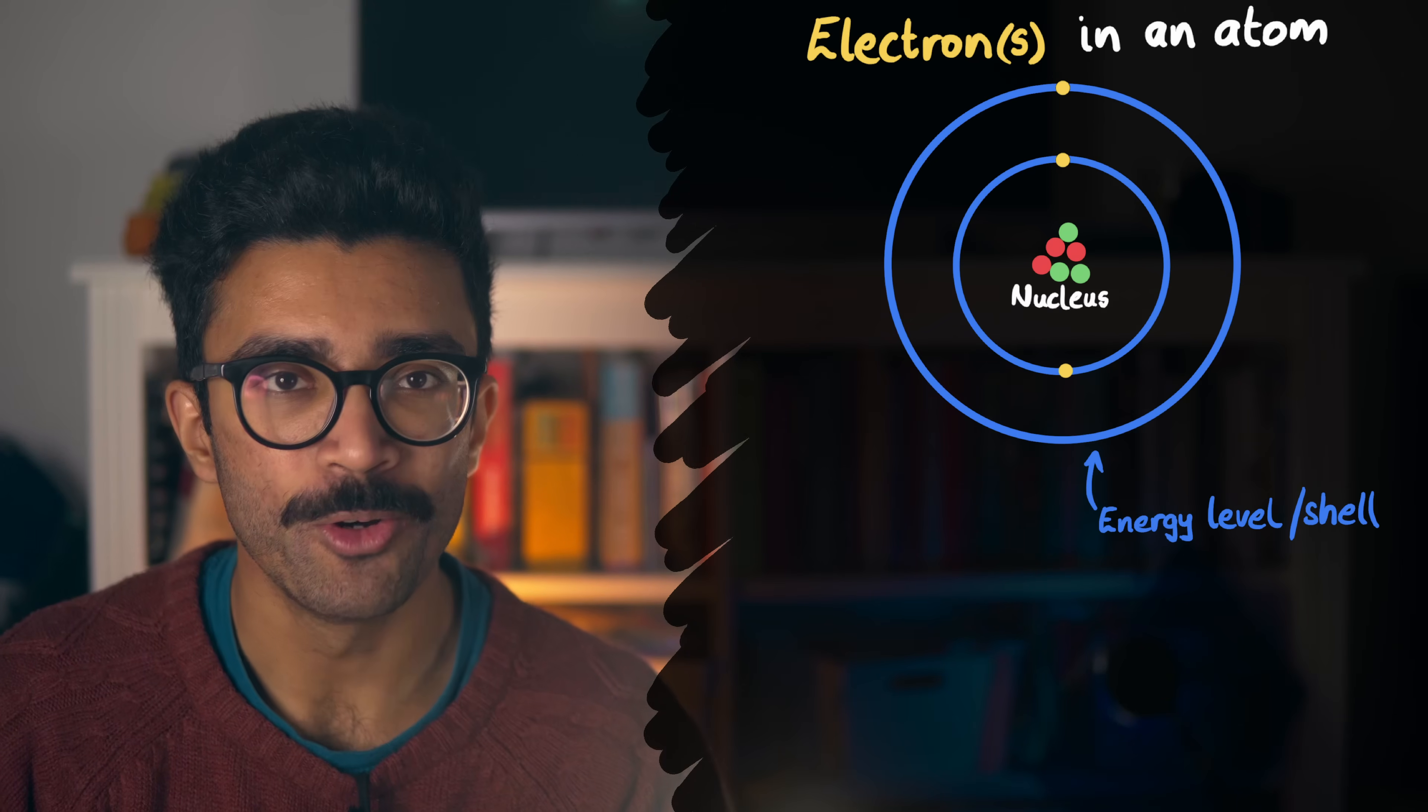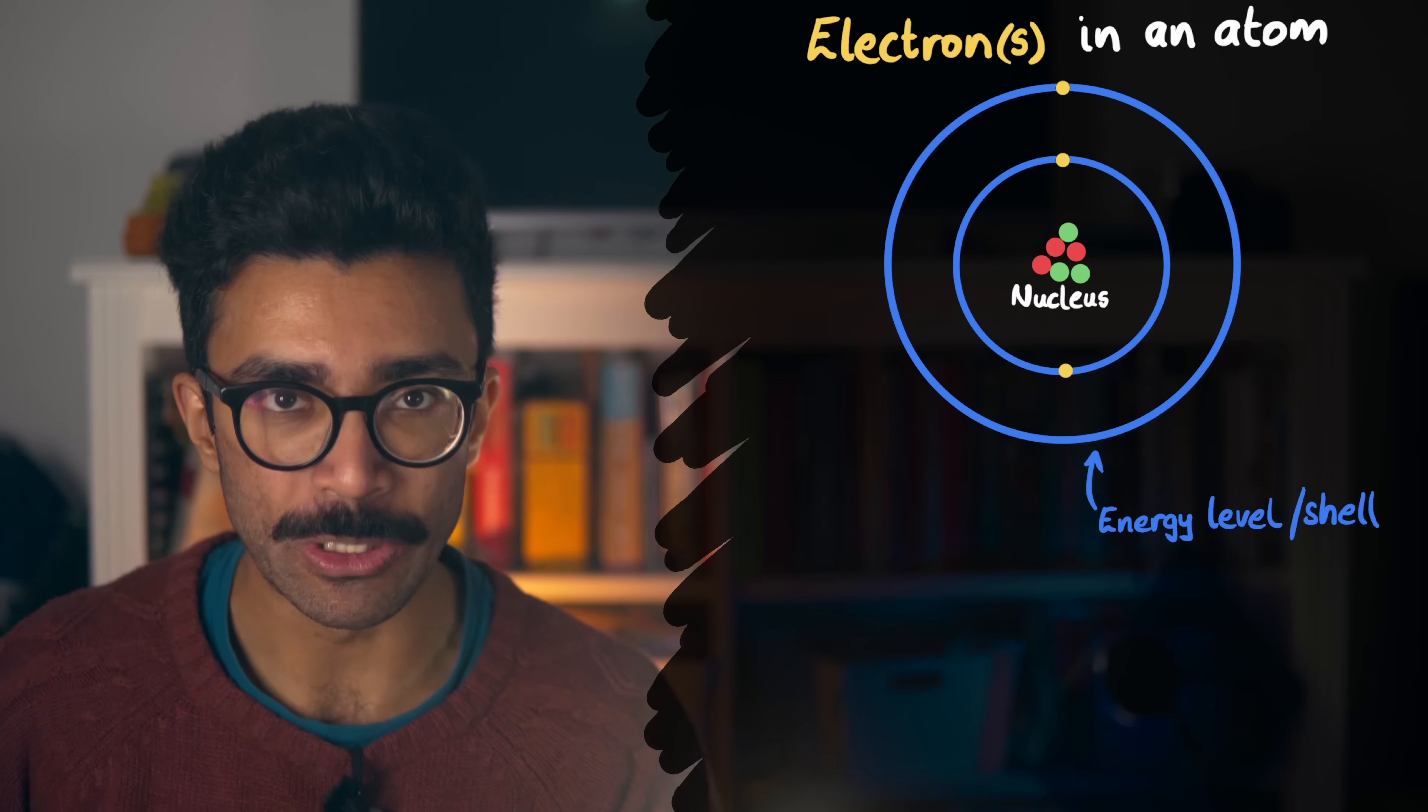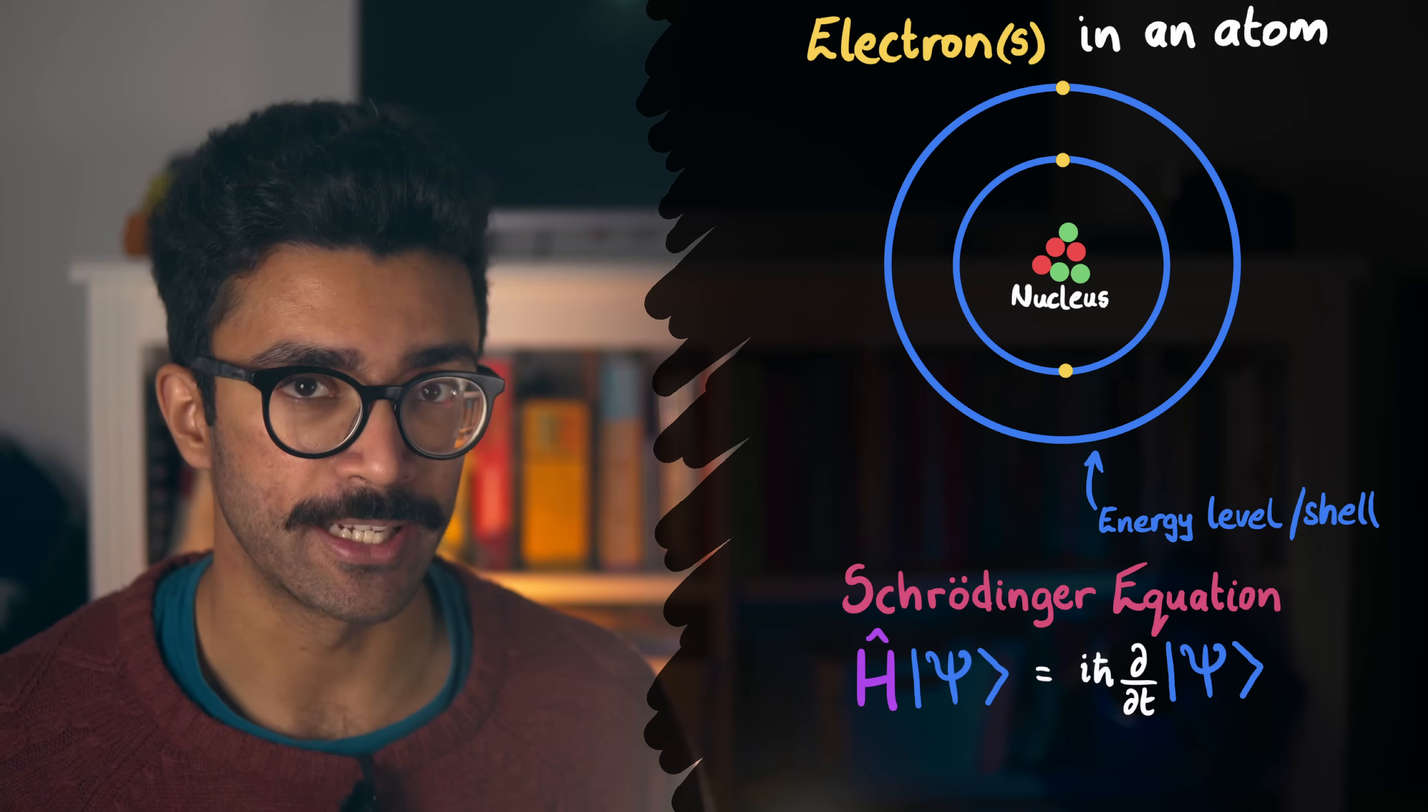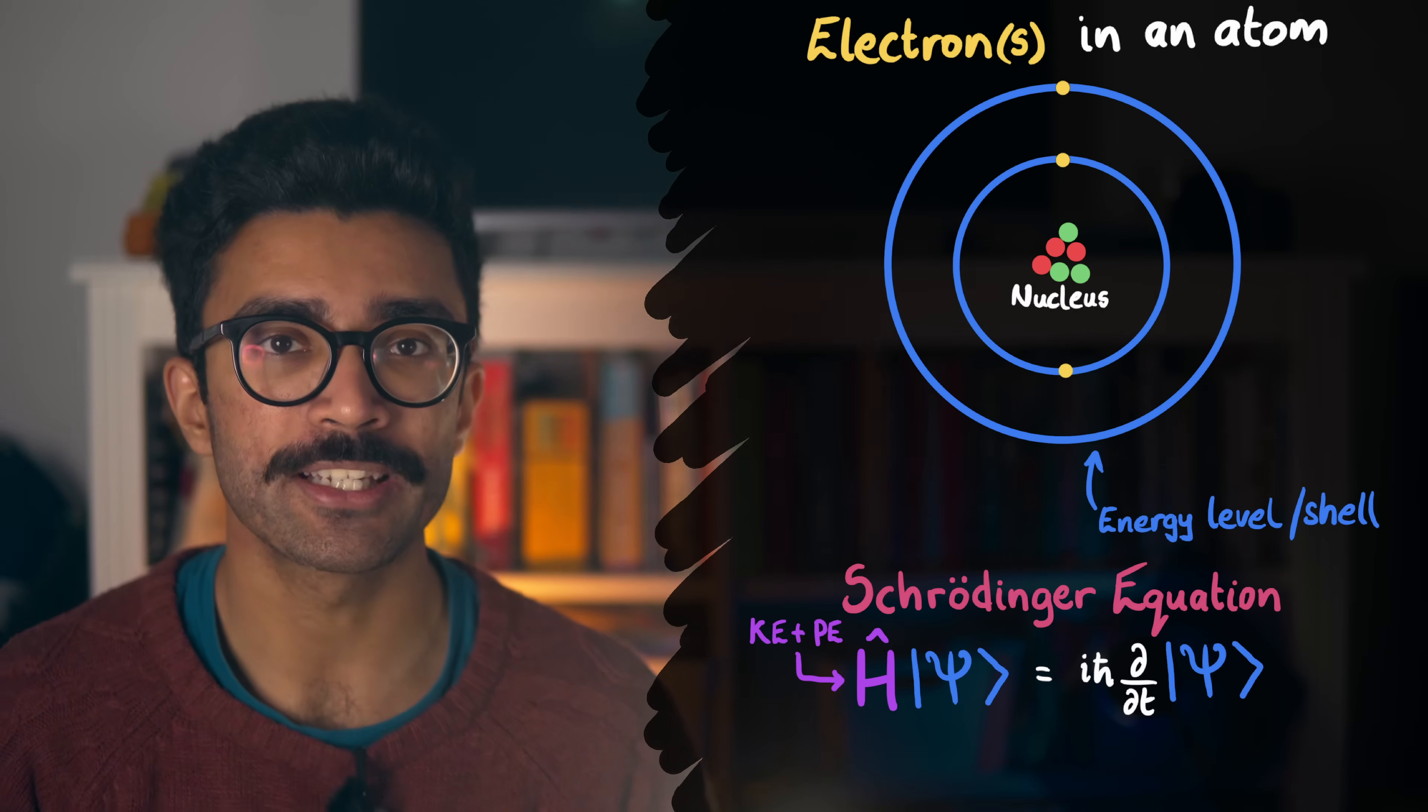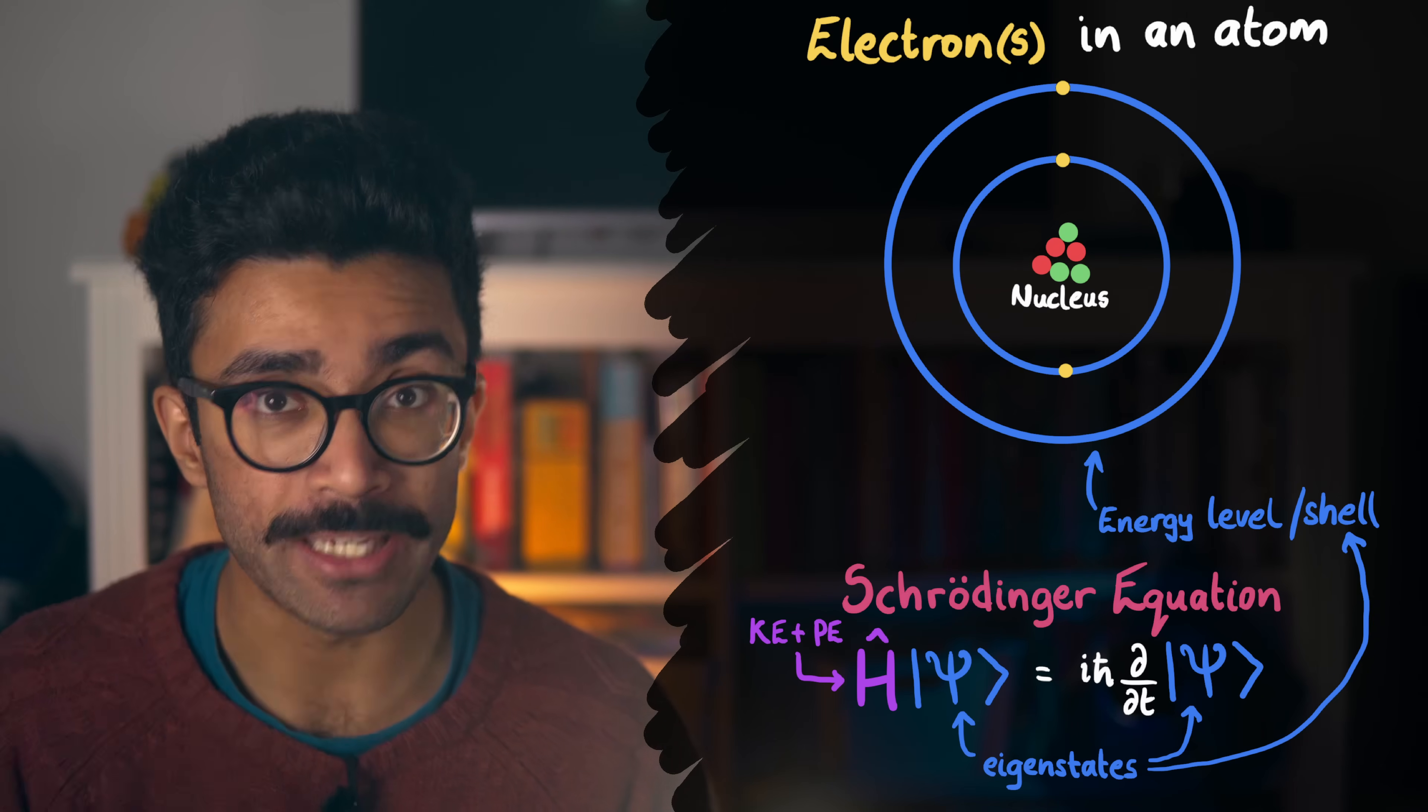But how do we know where these energy levels are for any particular atom? What determines the exact allowed values of energy? Well, it's essentially the Schrödinger equation. This is the governing equation of quantum mechanics. It accounts for specific properties of the system, such as the kinetic and potential energies found within it, in order to give us the allowed energy states, or eigenstates, that our system is allowed to be found in, based on its properties.